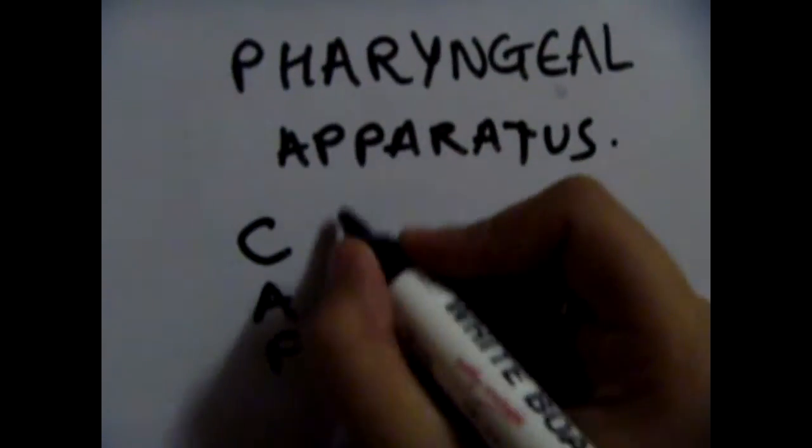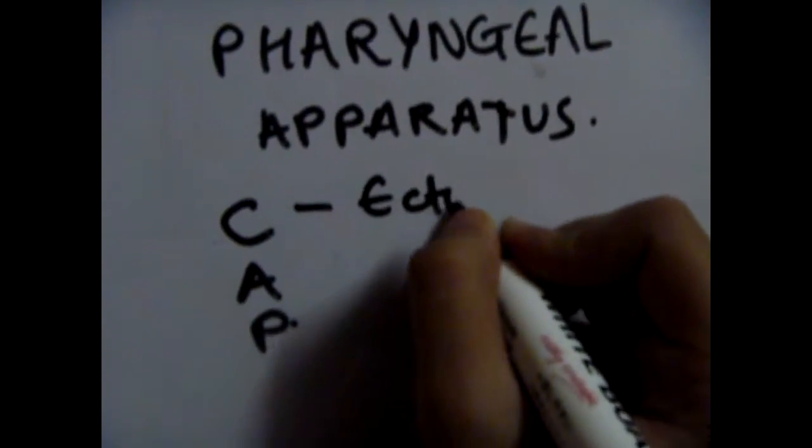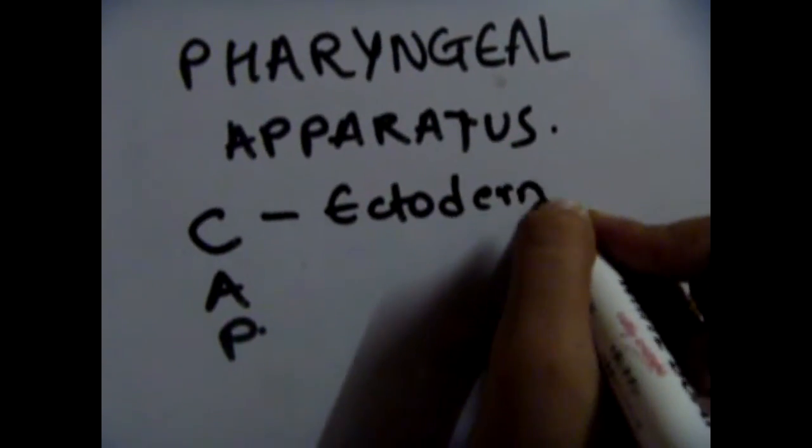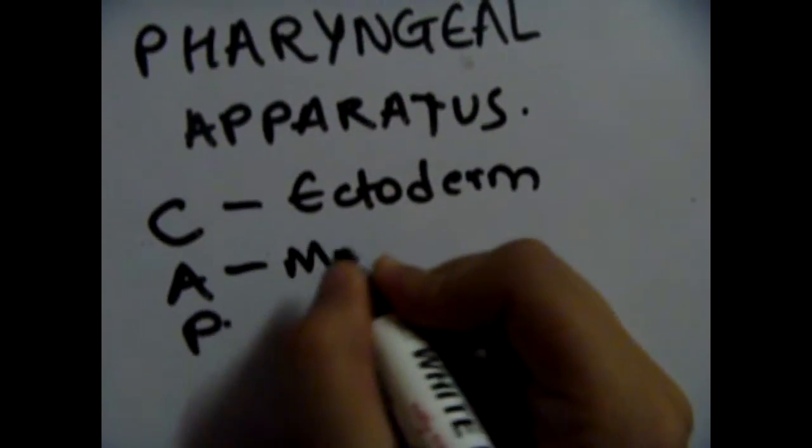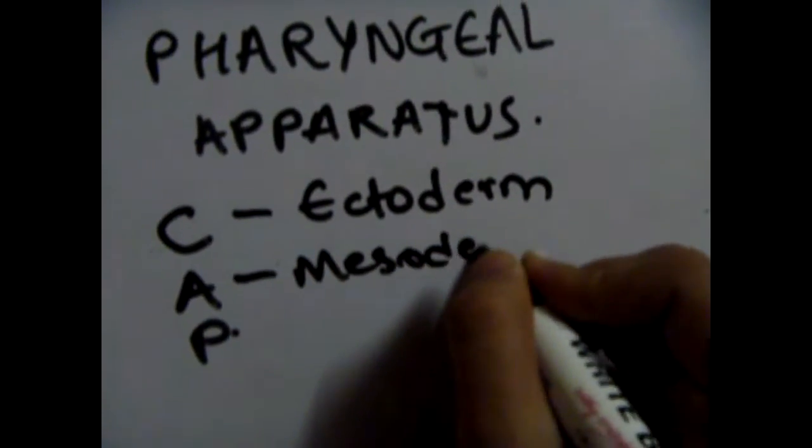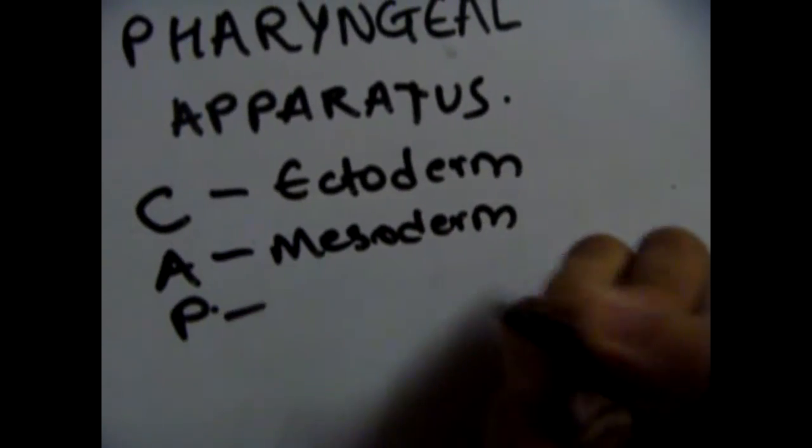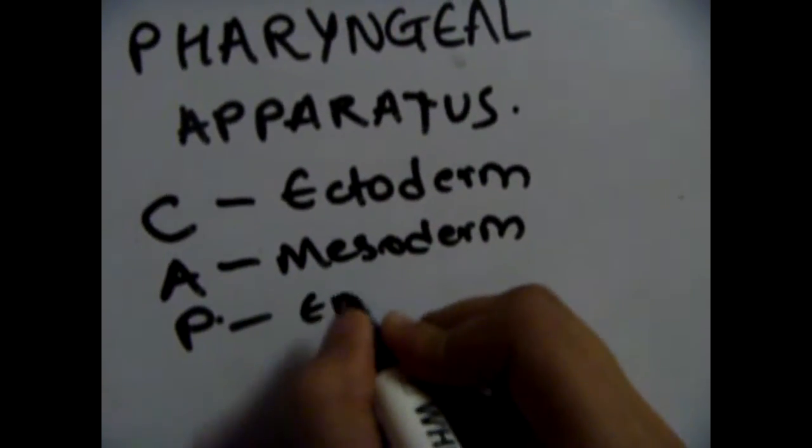When you go from outside to inside, that's the layers you encounter. There's ectoderm, which is basically the skin, then comes the mesoderm, which is your blood vessels and everything else, and then comes your endoderm, which is your organs and stuff.